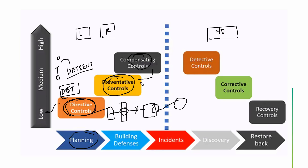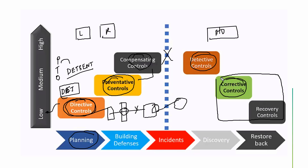Compensating control is used when your primary control is not strong enough to block. For example, when connecting to enterprise VPN with a password — since passwords can be hacked — a compensatory control like an RSA token is added. If an incident is triggered, detective control detects the activity. Then corrective control performs a temporary remediation. In CompTIA Security+, corrective and recovery are merged as one — isolate the system, do a clean installation, restore to production.